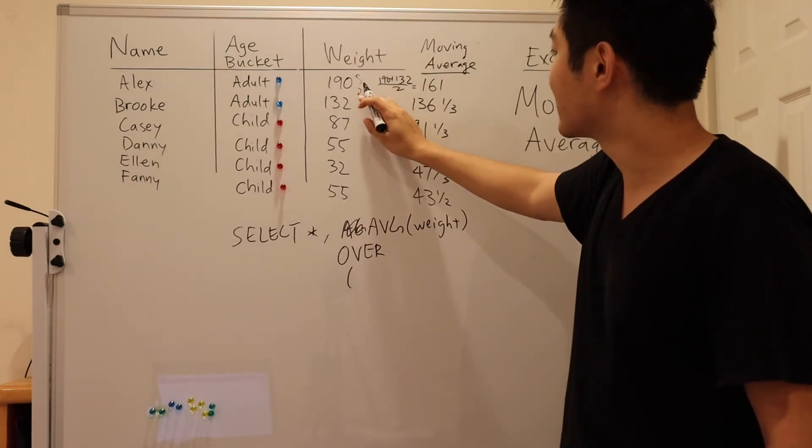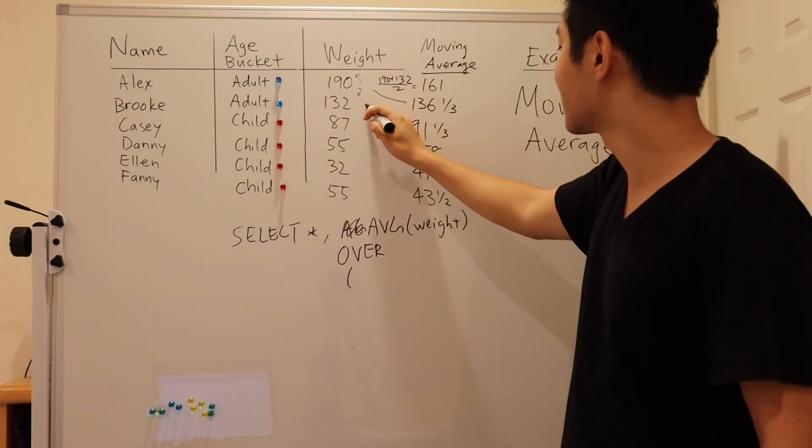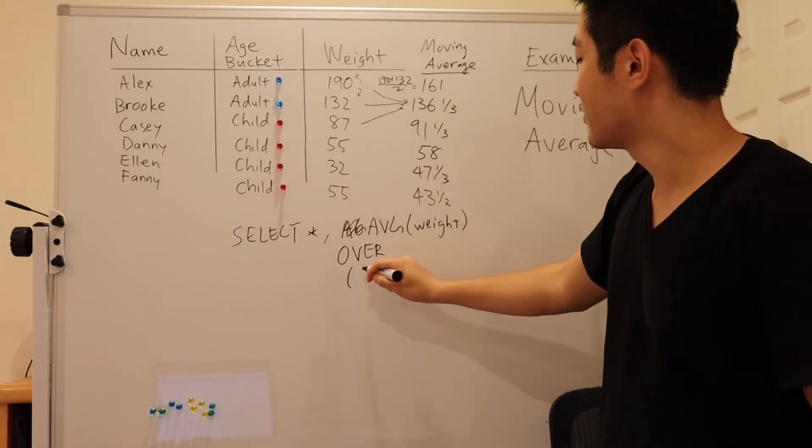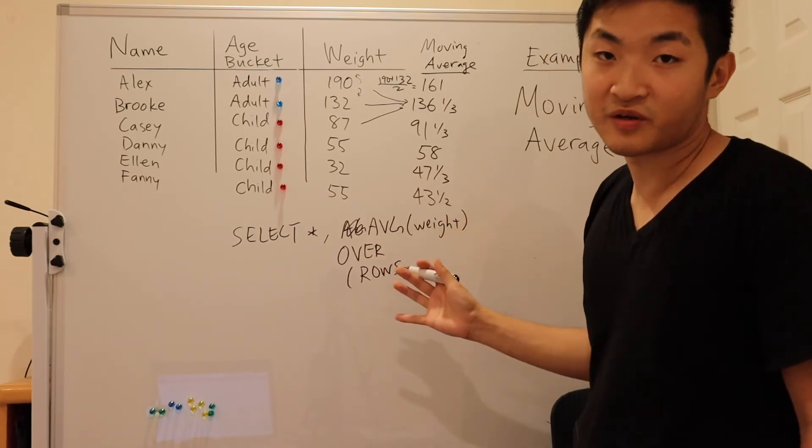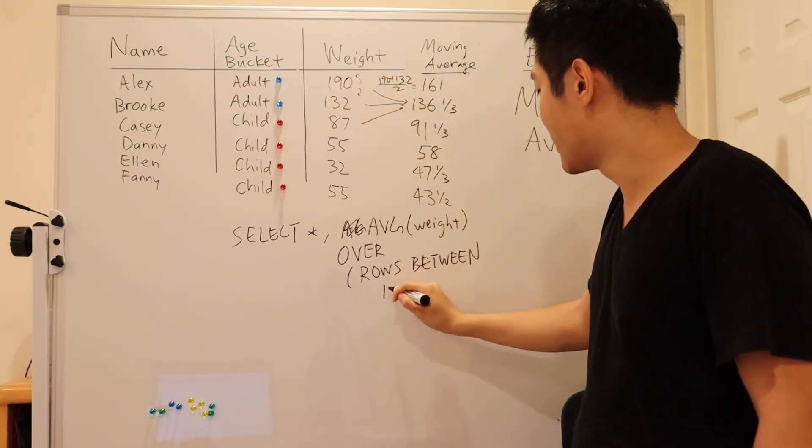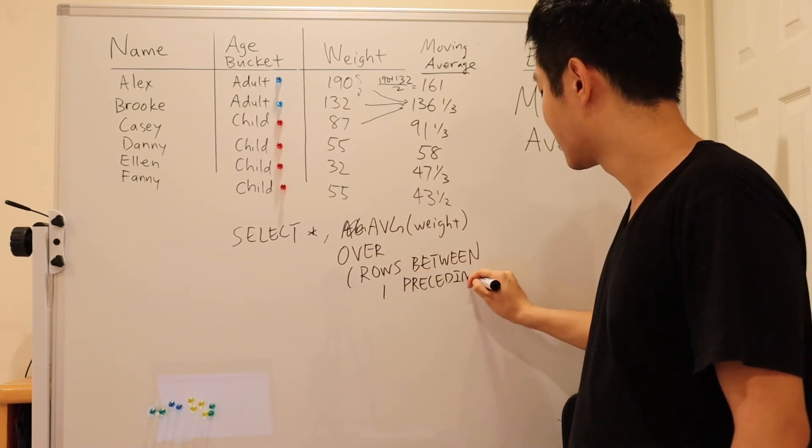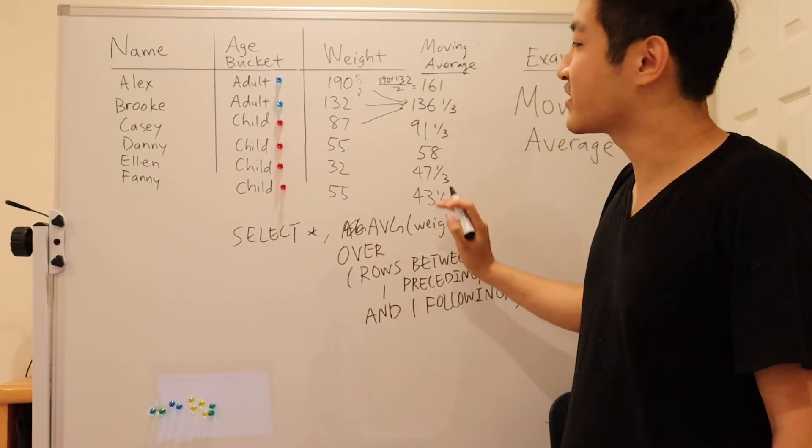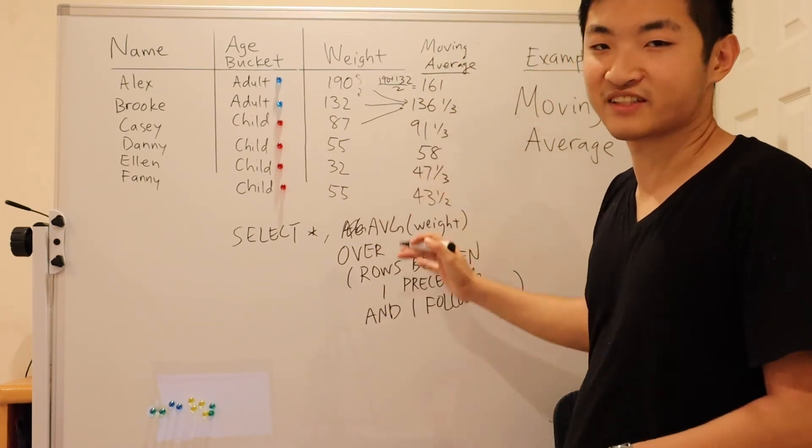Now for Brooke, we want to include Alex, Brooke, and Casey in the average to get 136. So how do we express that? Again, we limit the rows that will be a part of the window. We want just one row above and one row below. So one preceding and one following. So this will now give you the moving average for like a three row window, including yourself across the entire data study.